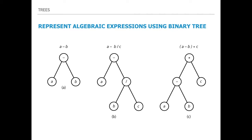A great example of how binary or m-ary rooted ordered trees are used in computer science is mathematical expression evaluation. When a compiler like Python or Java evaluates a mathematical expression such as a minus b, it represents it as a tree. The root is taken as the operator (minus) and the leaves or subtrees are the operands. For a minus b, the minus is the root and the operands a and b are the leaves.